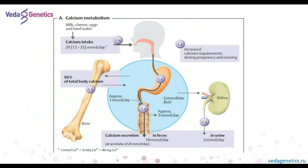Calcium metabolism realization is connected with parathyroid hormone. It also includes renal resorption and excretion with feces and urine. Vitamin D is well known for many functions in the body, and here it is connected with the functioning of calcium and its metabolism.